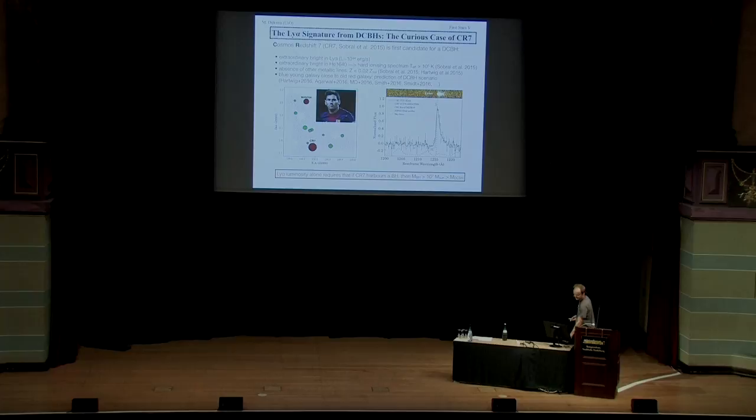What I will talk about in a bit more detail is the curious case of CR7. So I've heard, I know that people have talked about this a little bit at this conference already. So this galaxy is interesting because it has been proposed to be a candidate direct collapse black hole. And just let me summarize why that was. It was extraordinarily bright in Lyman-Alpha. 10 to the 44 ergs per second is as bright as it gets for Lyman-Alpha emitters at any redshift. The equivalent width of the Lyman-Alpha line is very high. It's much higher than that of most Lyman-Alpha emitters. Helium 1640 line detection is rare. The Helium 1640 line detection is actually quite significant. It would imply a very hard illuminating source in the center of the source.